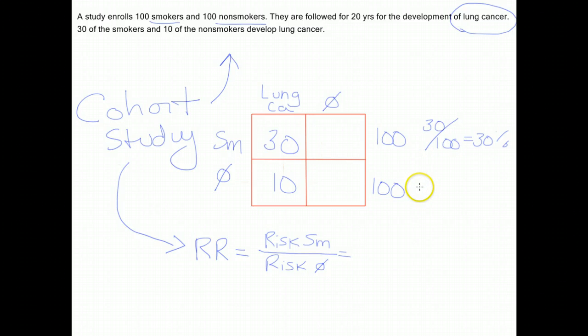Similarly, if I calculate the risk of developing lung cancer in the people who didn't smoke, I take everybody who didn't smoke, which is 100 people. In the numerator, we'll have the number that developed lung cancer at 10, and this will be 10%.